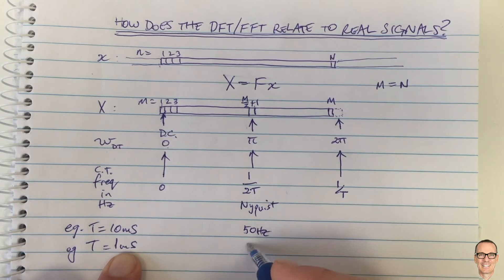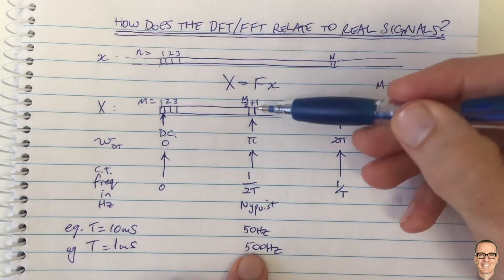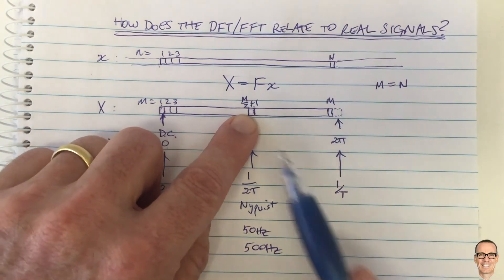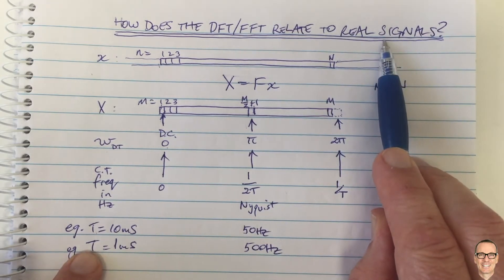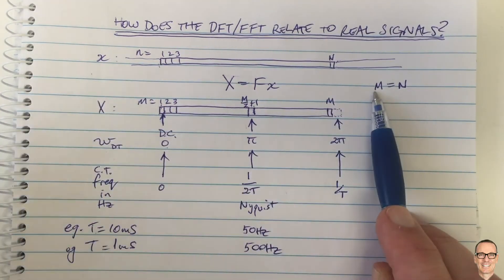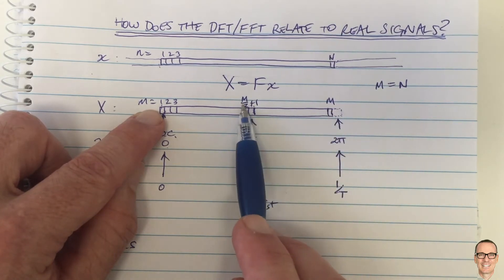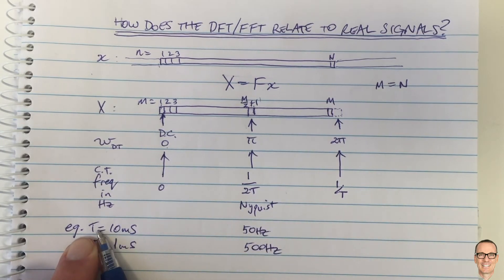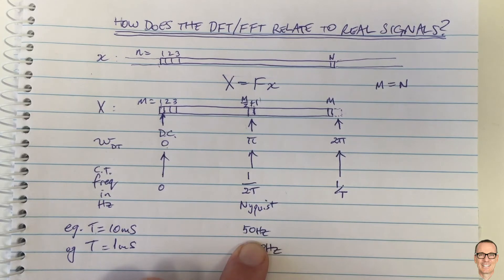If you're sampling at 1 millisecond, then 1/T = 1000 Hz and the Nyquist frequency would be 500 Hz. So the sampling period tells you what frequency each element in your vector corresponds to. You have two choices: the sampling rate and the number of samples M. If M is larger — 1000, 2000, 3000 samples — the vector gets longer, but the halfway point is always the Nyquist frequency.